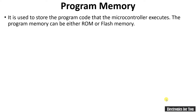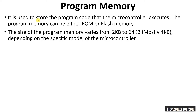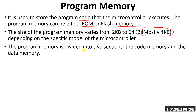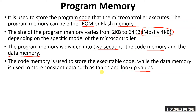Next is program memory, also known as code memory or ROM. It is permanent memory, and the program is stored in this permanent memory. The program memory may be ROM or flash. The size of program memory for the 8051 varies from 2 KB to 24 KB; for most versions of the 8051 it is 4 KB. The program memory is divided into two sections: the code memory, used to store the code, and a section used to store lookup tables.